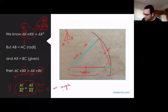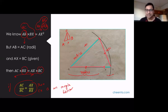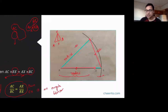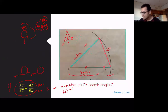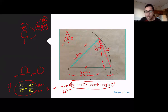Notice what we just found: AC over BC equals AX over BX, derived from the conditions of our problem. Since the angle bisector theorem is an if-and-only-if condition, this ratio condition means CX is an angle bisector. So CX bisects angle C — this angle is theta, and this is also theta. The full angle at C is 2 theta. That's a direct application of the angle bisector theorem to our problem.